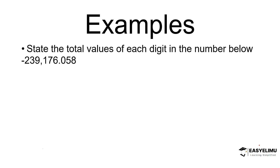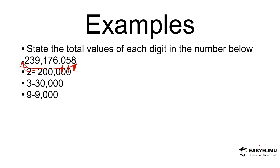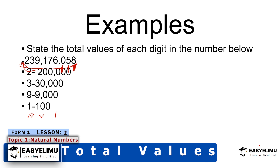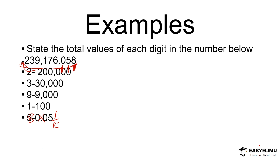So you can see the total values of the respective digits: 2 gives 200,000; 3 gives 30,000; 9 gives 9,000; 1 gives 100; 7 gives 70; 6 gives 6; 0 gives 0.0; 5 gives 0.05; and 8 gives 0.008. If you want to get the total value of the number, you add the total values of all the digits within the number.